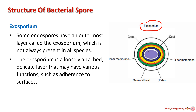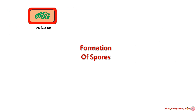Some endospores have an outermost layer called the exosporium, which is not always present in all species. The exosporium is a loosely attached, delicate layer that may have various functions such as adherence to surfaces.